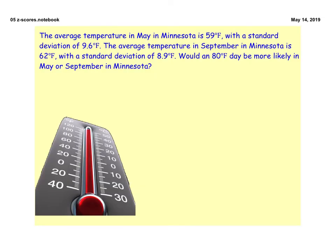Our next problem says that we have the average temperature in May in Minnesota is 59 degrees with a standard deviation of 9.6. The average temperature in September in Minnesota is 62 degrees with a standard deviation of 8.9. So the question is would an 80 degree day be more likely in May or September in Minnesota?